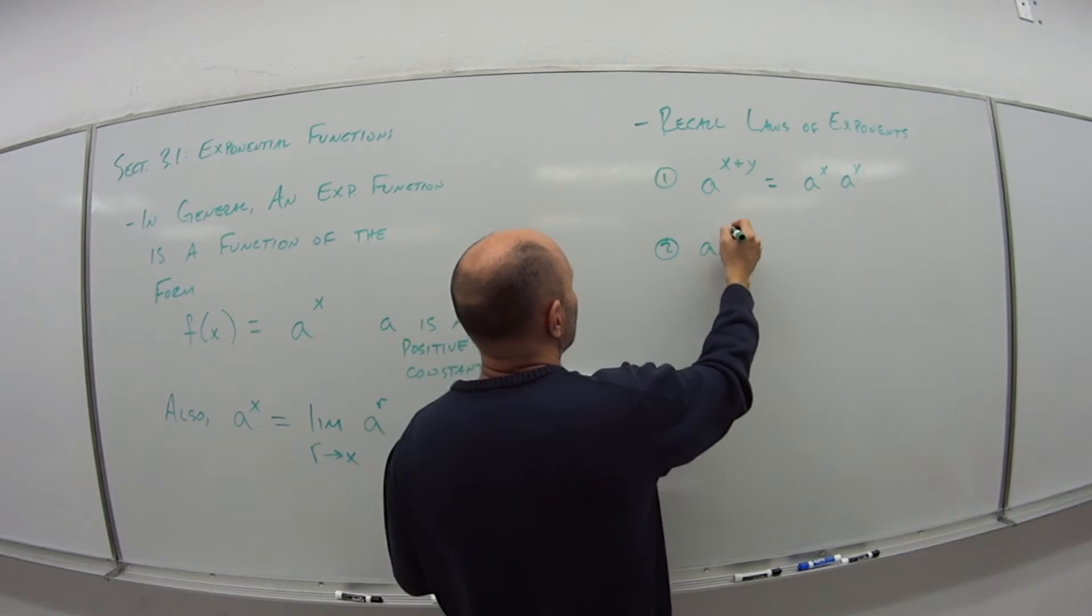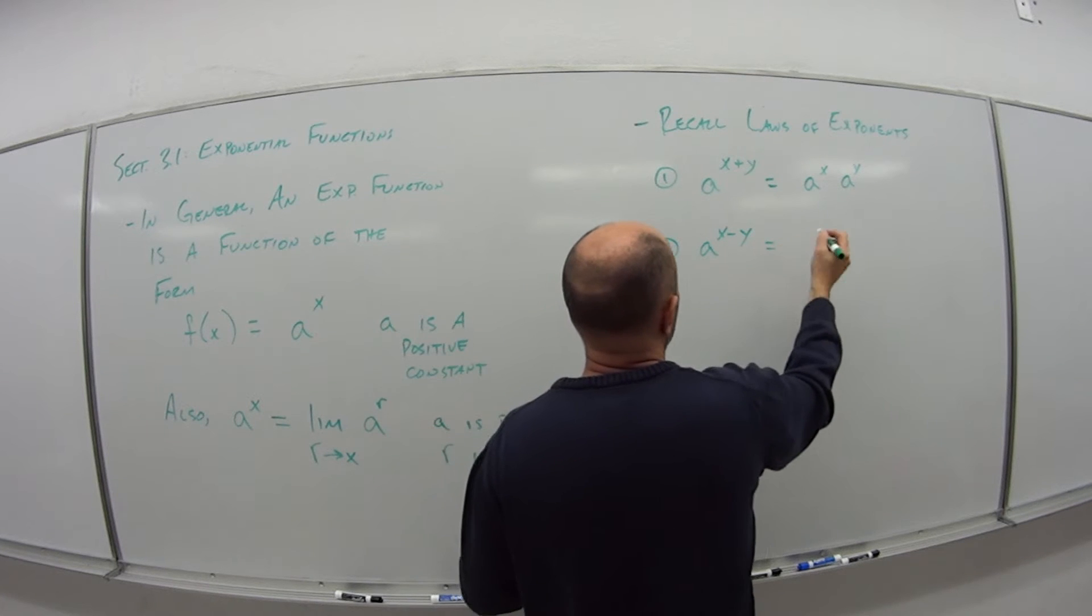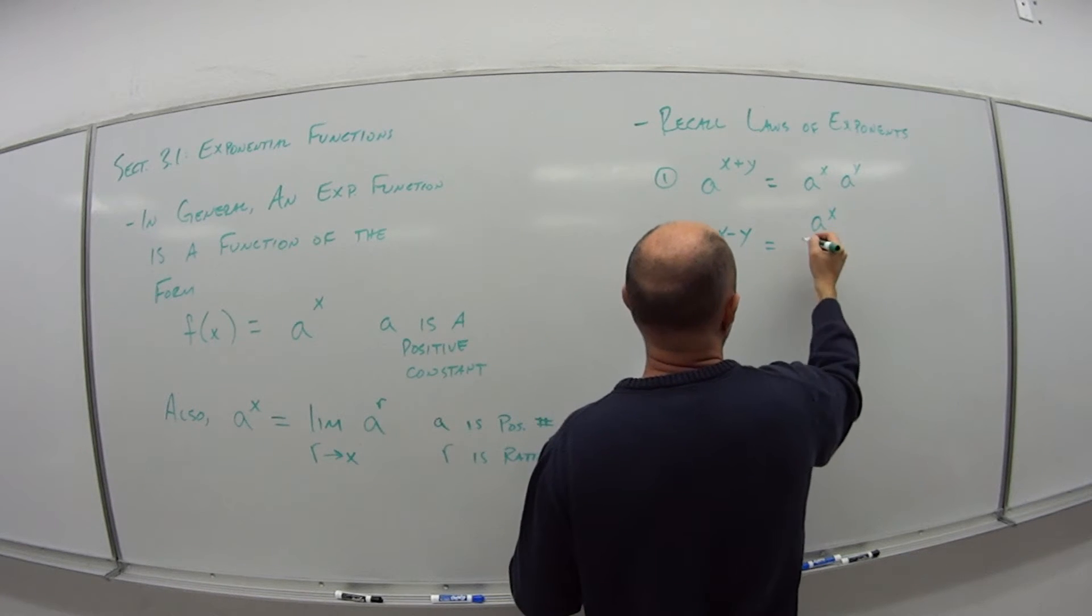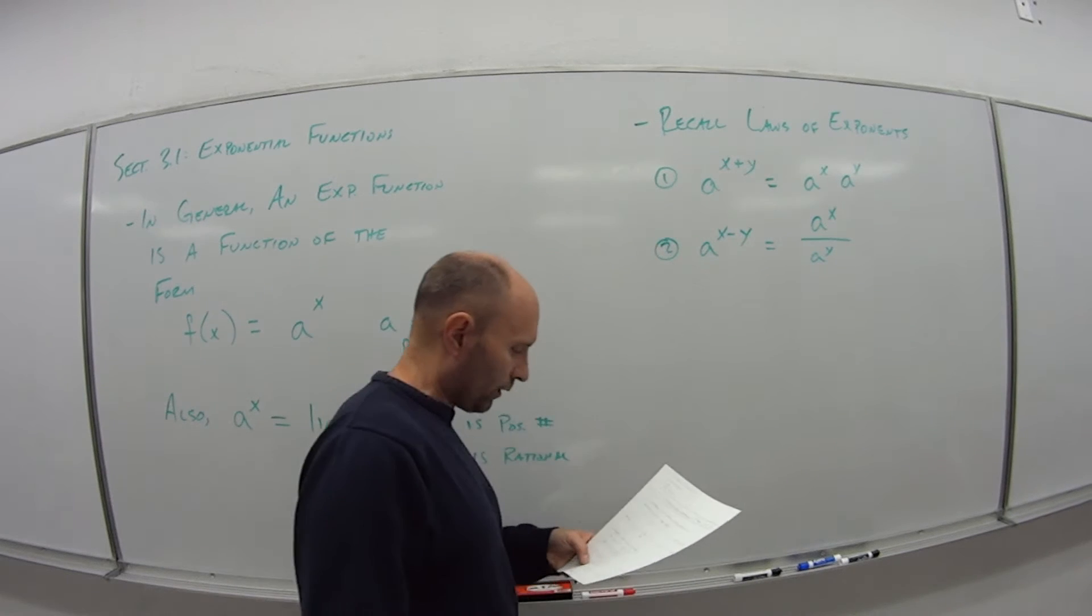If I have a to the x minus y, this is a to the x over a to the y power.